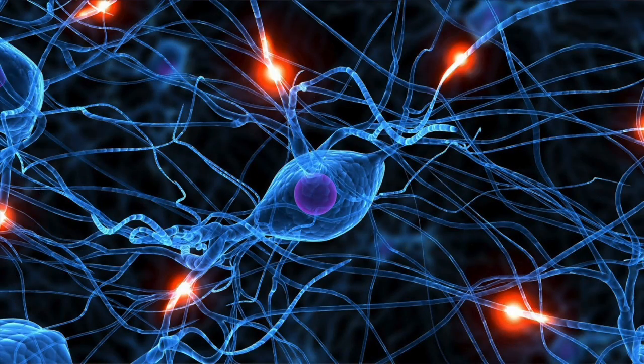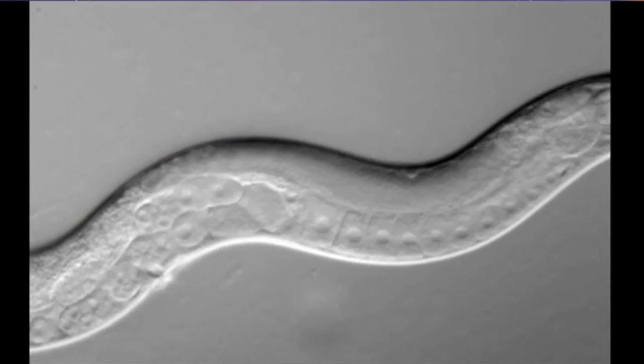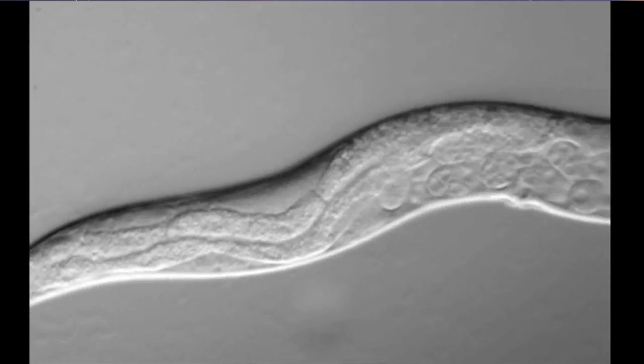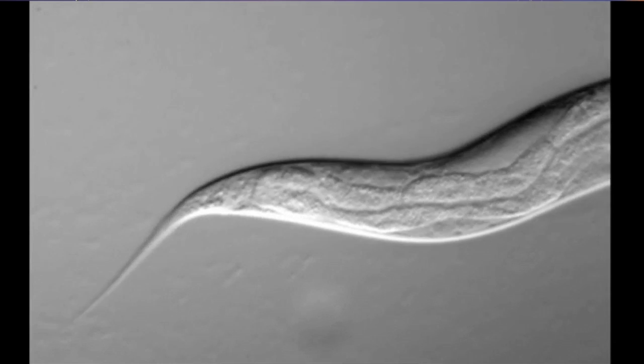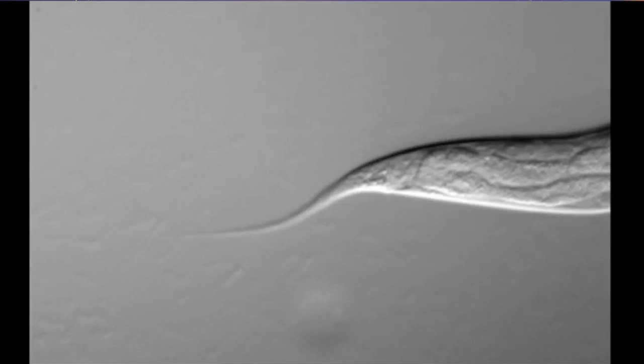It's tempting to say, it just takes neurons. The neurons do it. But how do they do it? Consider the tiny roundworm called Caenorhabditis elegans. Its brain has only 302 neurons. 302 switches.